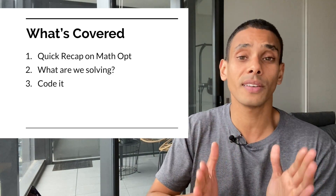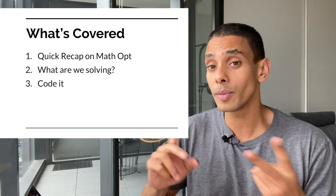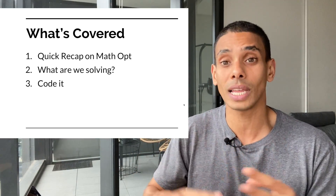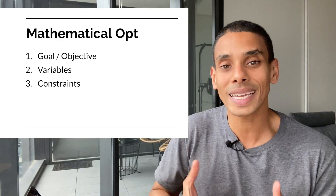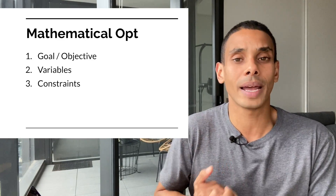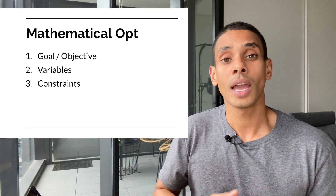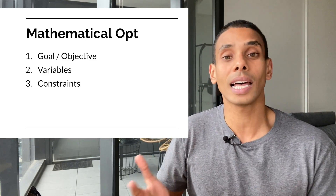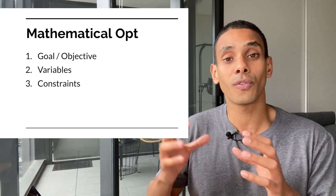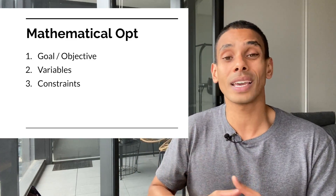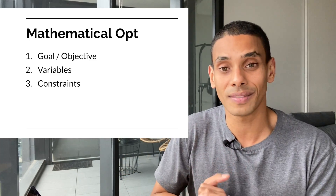We're going to be covering a bunch today, but specifically we're going to be covering what mathematical optimization is, the problem that we're trying to solve, and we're actually going to code it up. So what is mathematical optimization? There are three key things you need: a goal or objective, your variables or levers that you can change, and your constraints. You're trying to find an optimal value for your variables so that you can maximize or minimize your goal and stay within your specific constraints.